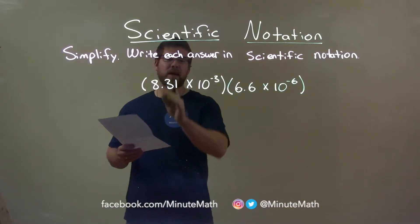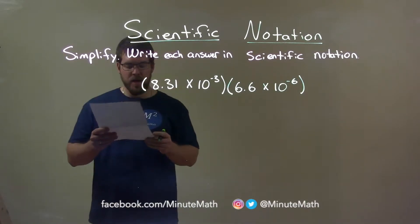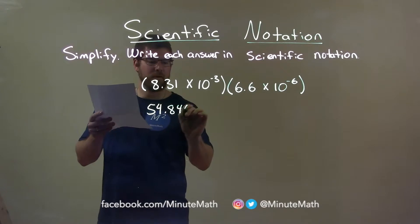Well, the first thing I want to do is take the 8.31 and multiply that by 6.6. This gives us 54.846.